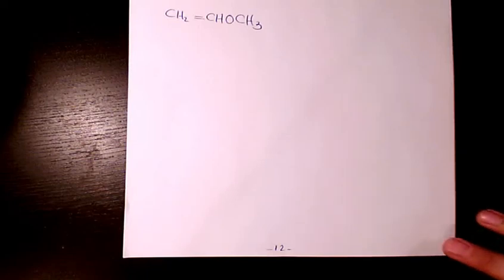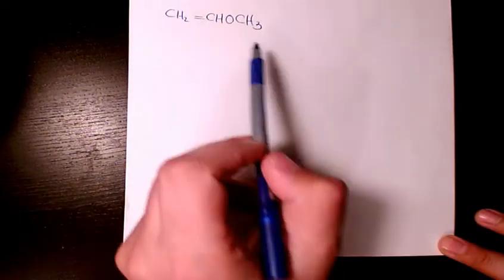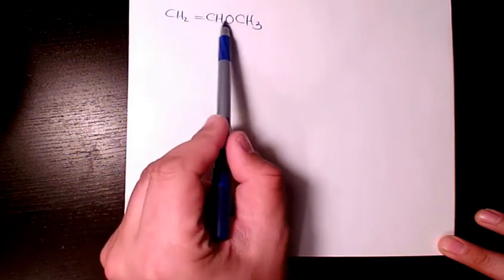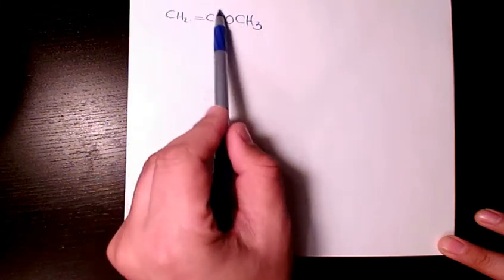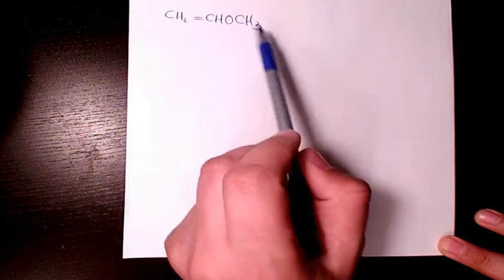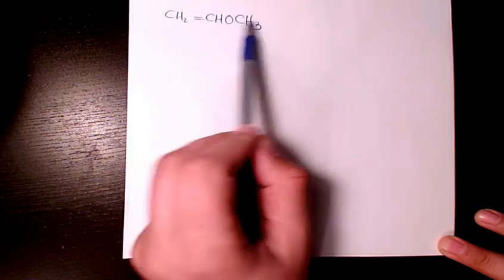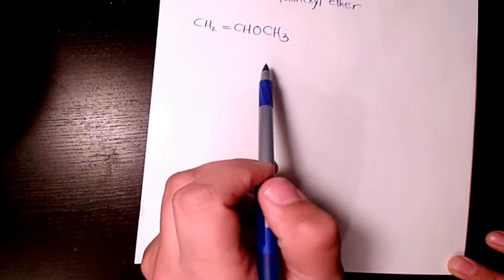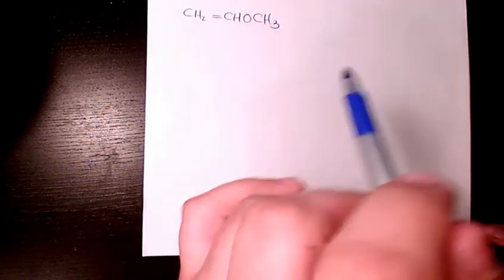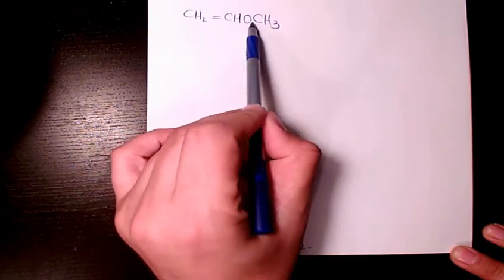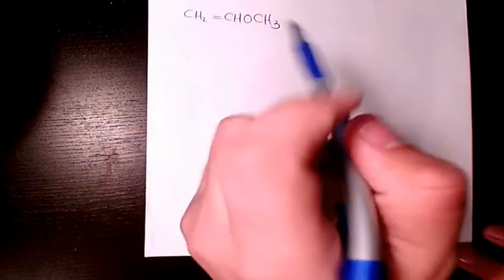What's up guys, this is Massey, welcome to my channel. In this video I want to show you how to name this organic compound. As you can see, we have an ethene group here and a methyl group here, and they are connected to each other by an oxygen atom, which means that we have an ether.